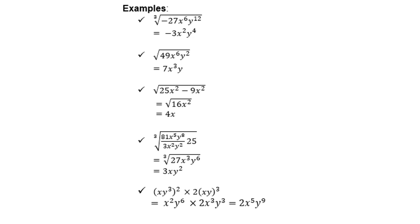For the square root of 25x squared minus 9x squared, please do not find the square roots individually — that will be incorrect. You must first add the like terms before you find the square root. So 25 minus 9 gives you 16x squared, which of course gives a square root of 4x.